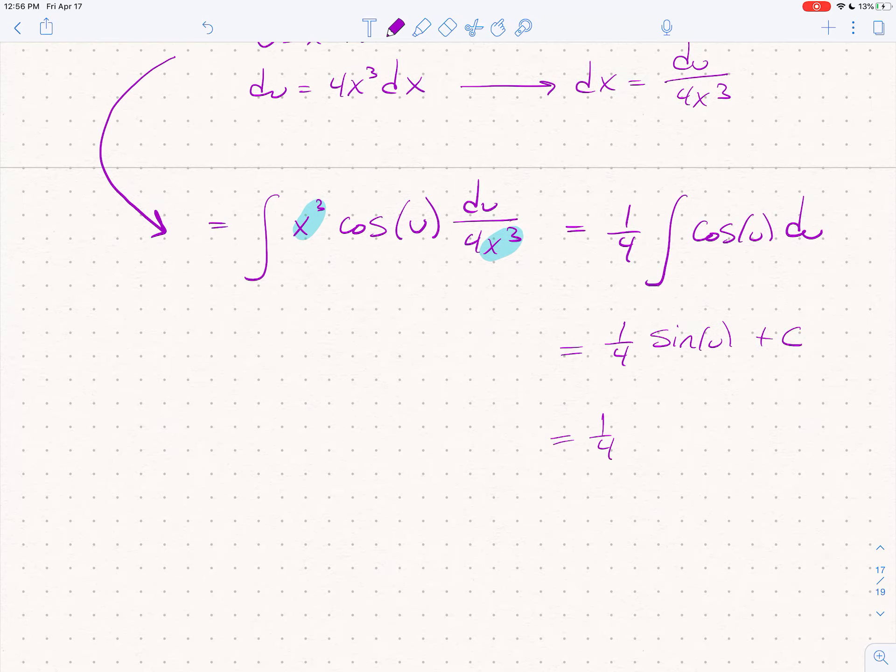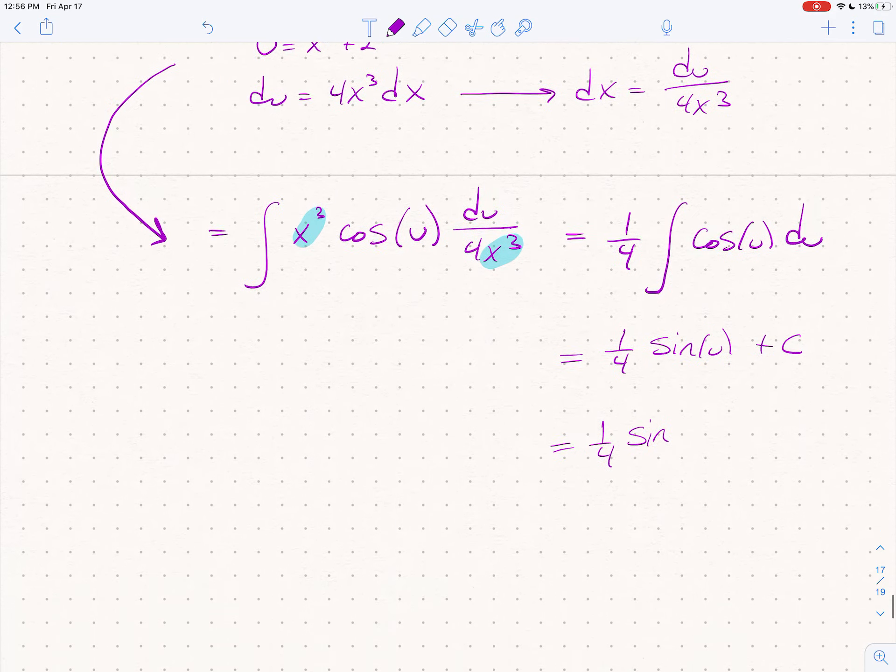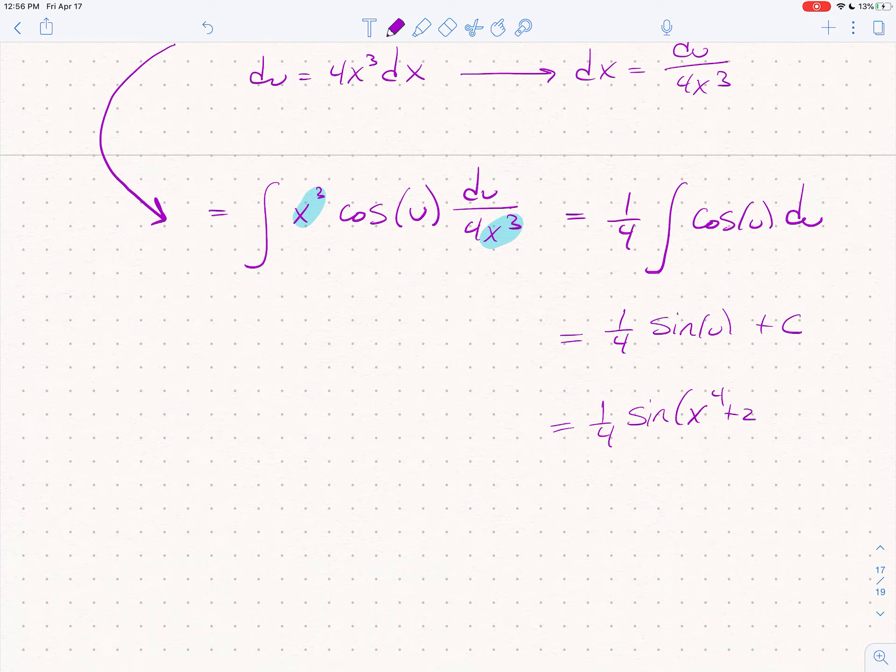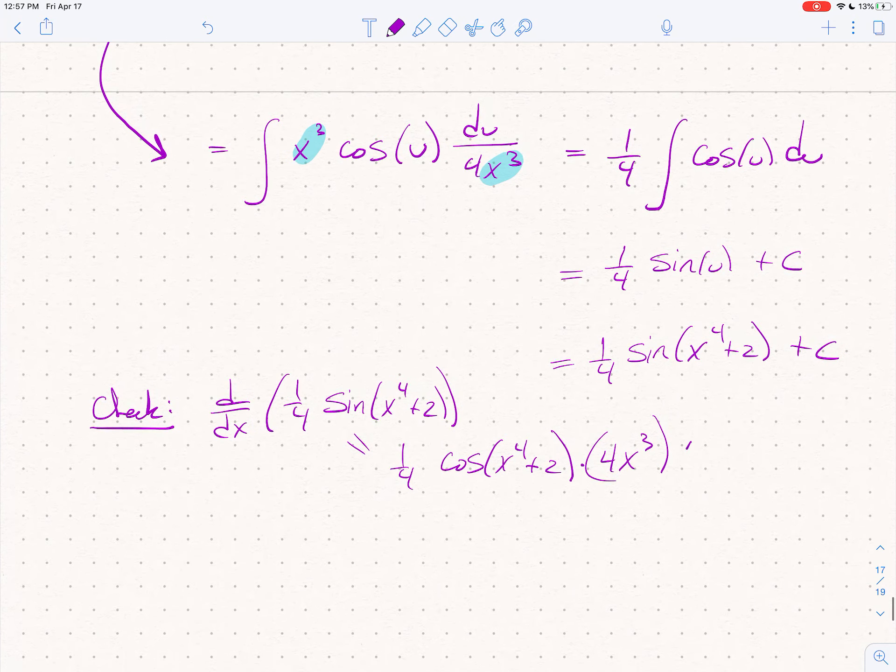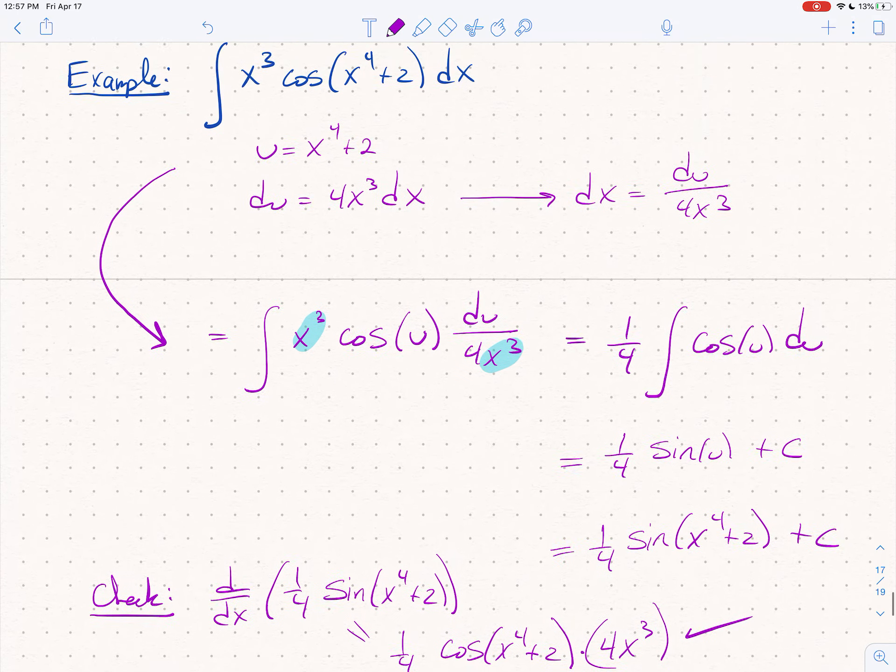And so, what was u? Well, u was x to the 4th plus 2. So, sine of x to the 4th plus 2 plus c. We can check this. We don't have to check these. But just to show you, if I take the derivative of one quarter sine of x to the 4th plus 2, I can know whether or not I've gotten this right. I'm going to get a quarter times cosine of x to the 4th plus 2 times the derivative of the inside, which is 4x cubed. The 4's cancel and you get exactly what we had up there. So, this works. We did find our antiderivative.